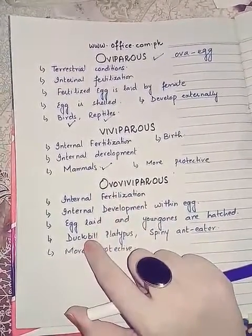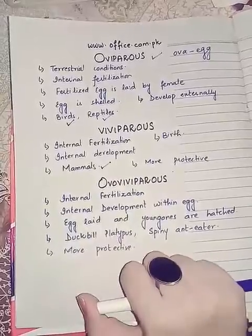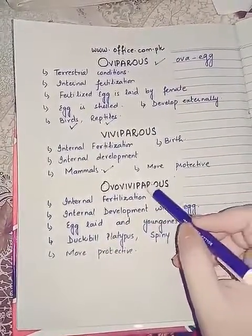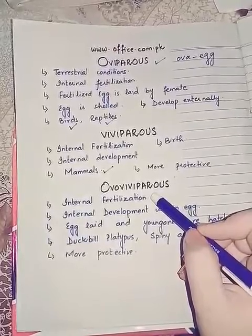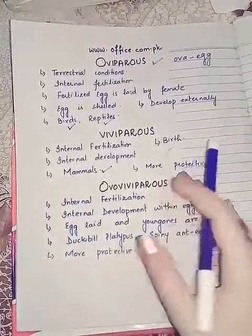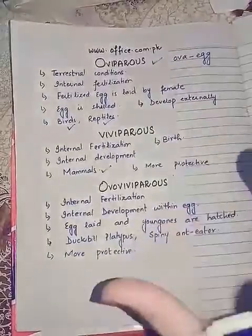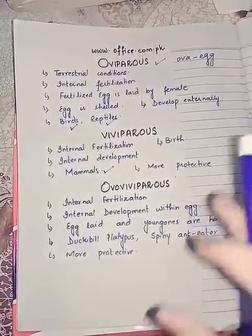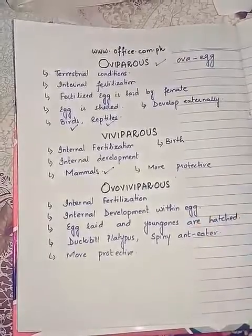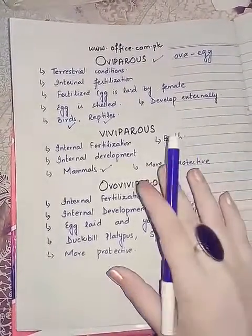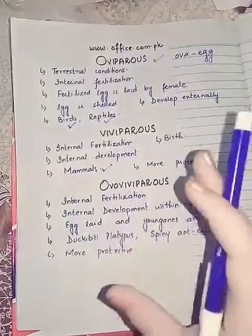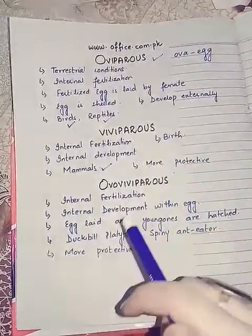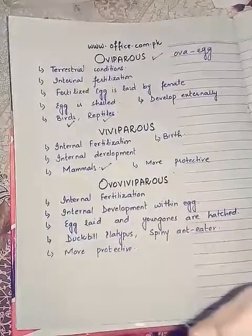Ovoviviparous animals include the duckbill platypus and spiny anteater. In these animals, fertilization is totally internal. After fertilization, the zygote develops within a shelled egg and takes the form of the young ones or the new organism. Once development is completed inside that egg, the developed egg is laid.